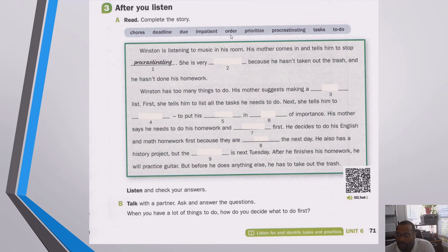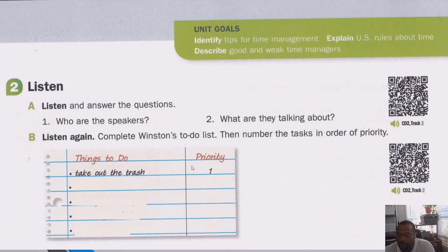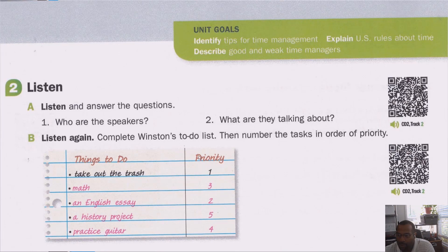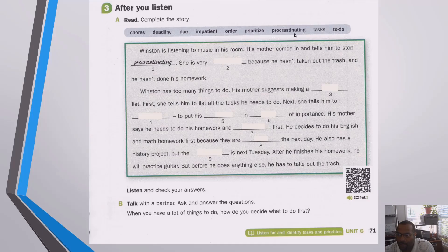'Prioritize' is very similar to order, but it has to do with — remember when we were talking about Winston and his things — he had to prioritize, make a priority. Not only did he have to put them in order, but he had to say: I have to do this first, this second, this third, this fourth, and this fifth. 'Procrastinating' — this is something we all know. Having to do a bunch of things and not getting them done. You find something else to do, like watch TV or play video games. In Winston's case, he was procrastinating and his mom came in and told him to get back to work.